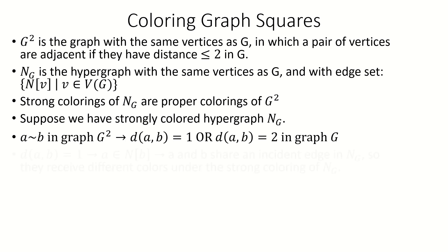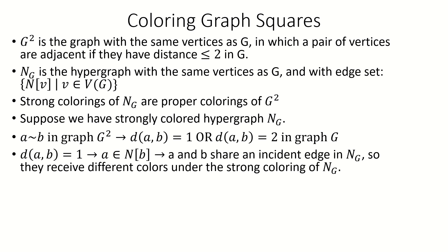If they were at distance one, then they were in each other's closed neighborhoods, meaning there's an edge that contains A and B in hypergraph N sub G. Therefore A and B receive different colors under our strong coloring of N sub G.